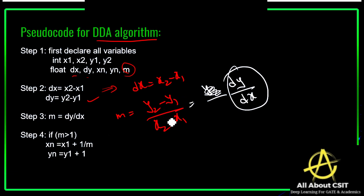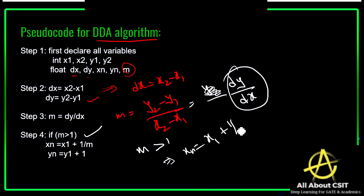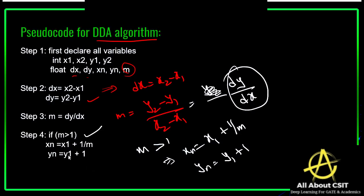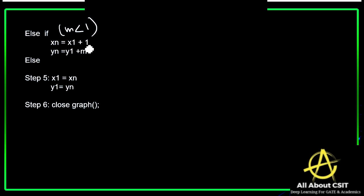If the slope m > 1, the next coordinates are: xn = x1 + (1/m) and yn = y1 + 1. If m < 1, then xn = x1 + 1 and yn = y1 + m. If m = 1, then xn = x1 + 1 and yn = y1 + 1, and close the graph.